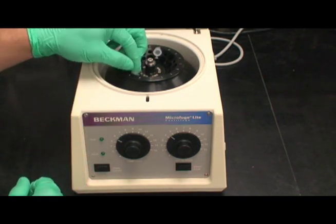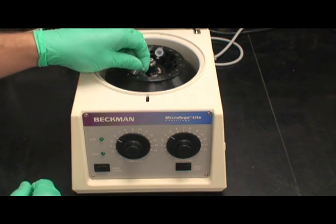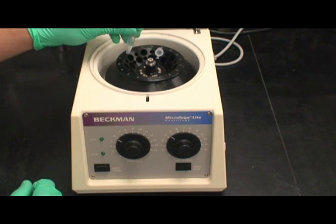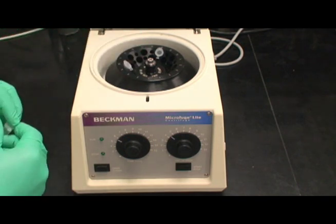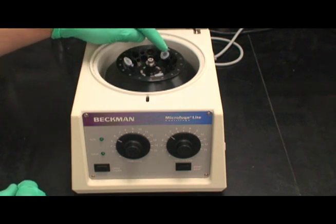This does, however, make balancing more difficult. And in this case, the only way to effectively balance the rotor is by using three identical tubes. Notice that there are two spaces between each tube.